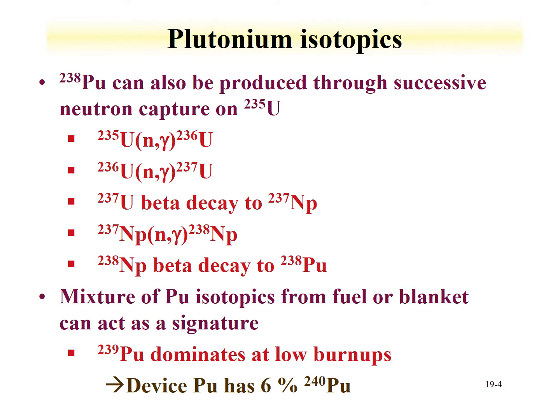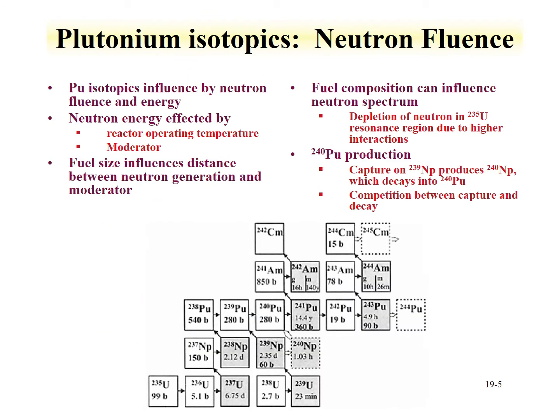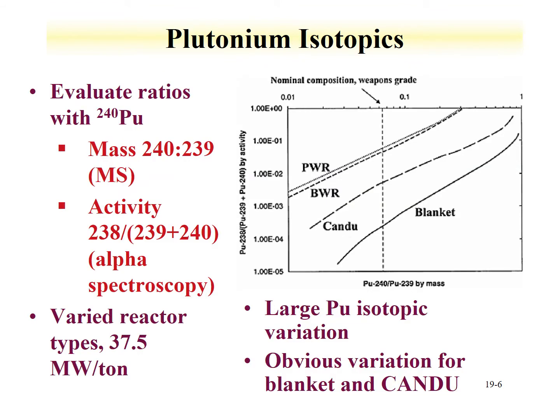Continuing with plutonium-238, the isotopic distribution of plutonium is also influential. A key signature that can be obtained from plutonium isotopics is an evaluation of the reactor type that was used to produce the plutonium. This is achieved by evaluating ratios with plutonium-240.